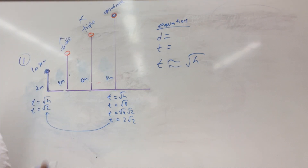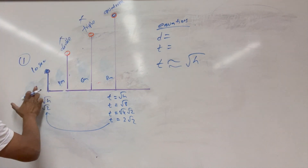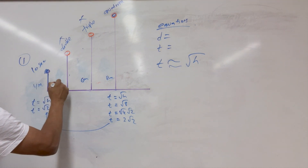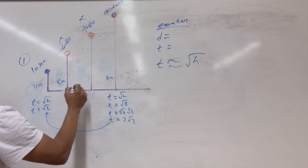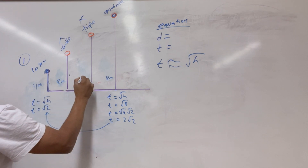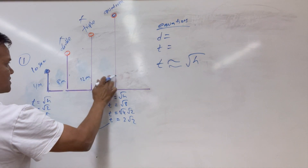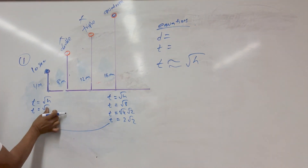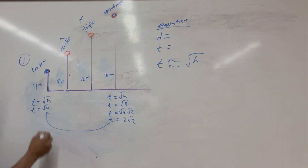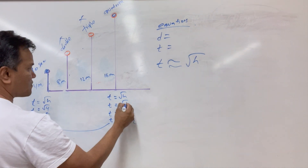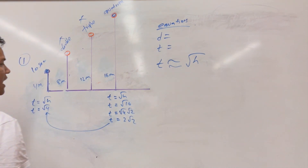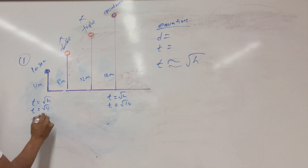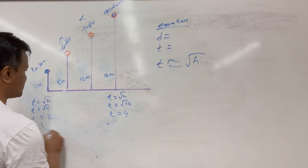It doesn't have to be 2 meters — it can be 4 meters. Then this has to be 8 meters, this has to be 12 meters, and this has to be 16 meters. Instead of the square root of 2 and square root of 8, we use square root of 4 and square root of 16, and t equals 2 and t equals 4 — double.